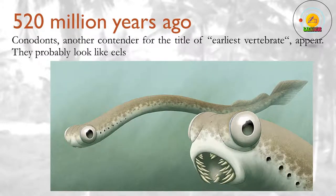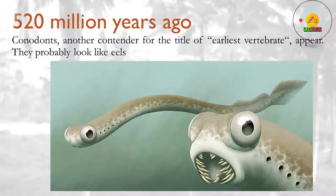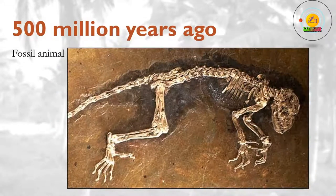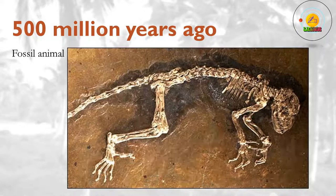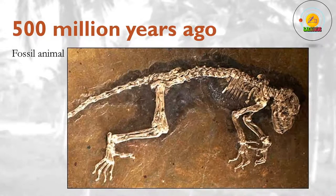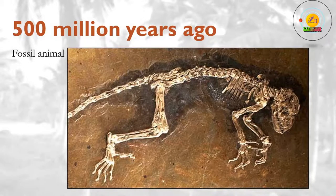520 million years ago? Conodonts, another contender for the title of earliest vertebrate, appear. They probably look like eels. 500 million years ago? Fossil evidence shows that animals were exploring the land at this time. The first animals to do so were probably euthycarcinoids, thought to be the missing link between insects and crustaceans. Nectocaris pteryx, thought to be the oldest known ancestor of the cephalopods — the group that includes squid — lives around this time.